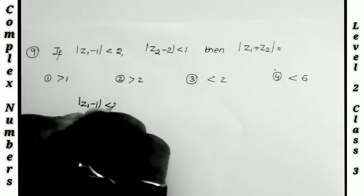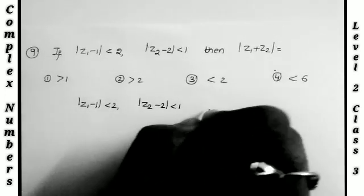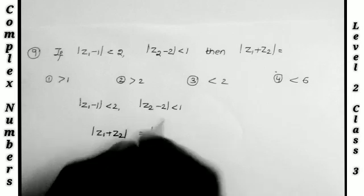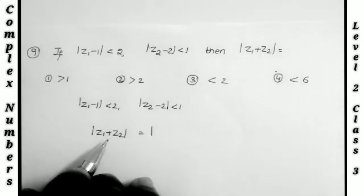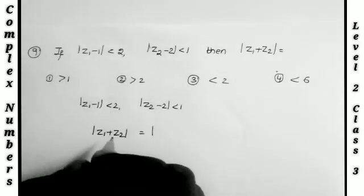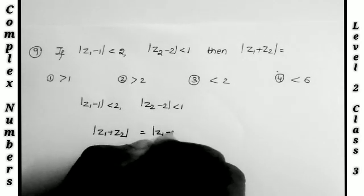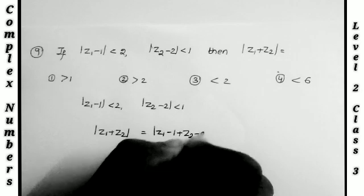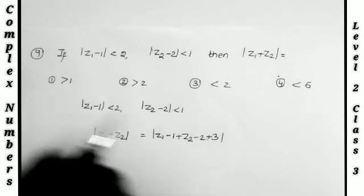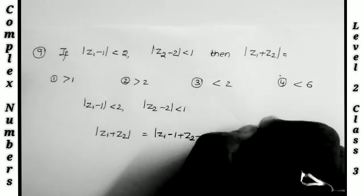The next problem: two conditions are given — |z1 - 1| < 2 and |z2 - 2| < 1. We have to find the value of |z1 + z2|. I convert the expression by rewriting |z1 + z2| as |z1 - 1 + z2 - 2 + 3|, adding and subtracting numbers without changing the value, since we have the values of |z1 - 1| and |z2 - 2|.